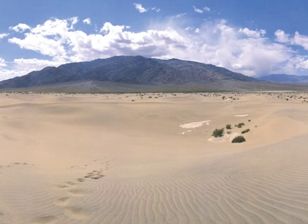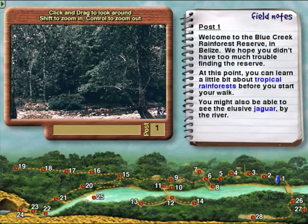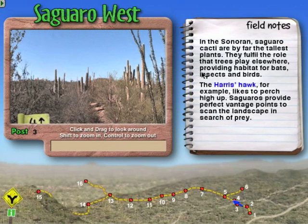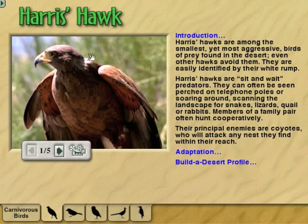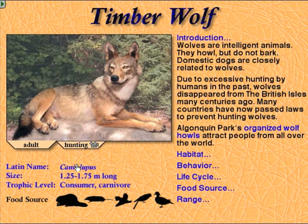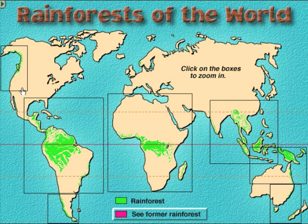Each with QuickTime virtual reality field trips to actual locations, allowing students to explore on their own, learning about related concepts as they go, explore the plants and animals, as well as the geography and mechanisms that allow these ecosystems to thrive.